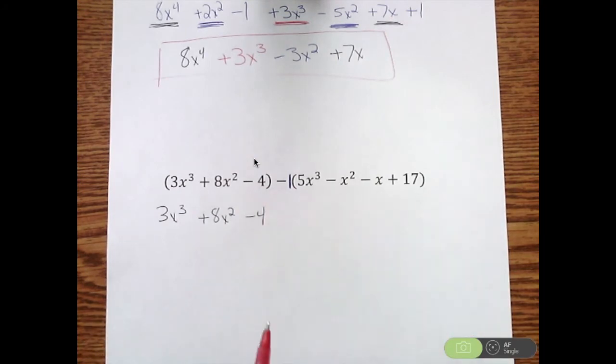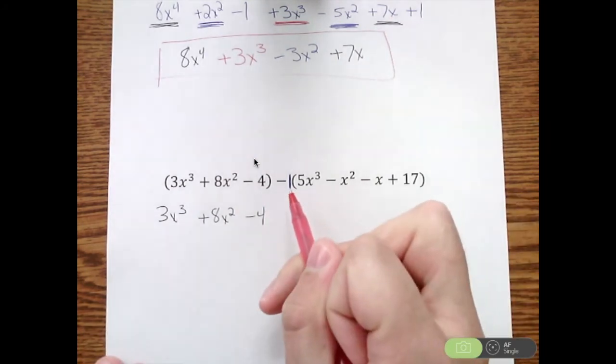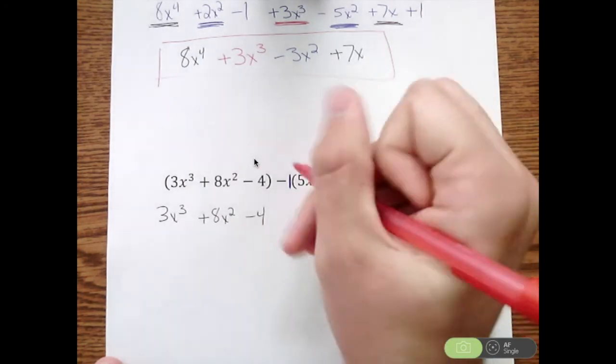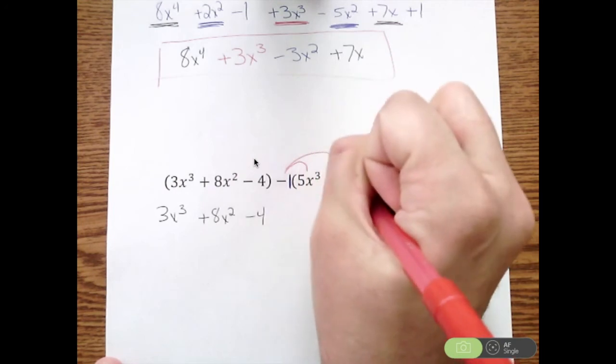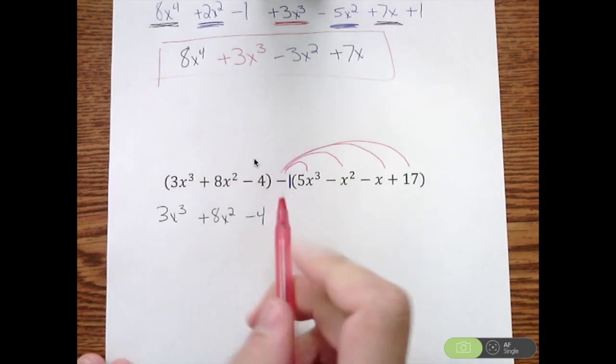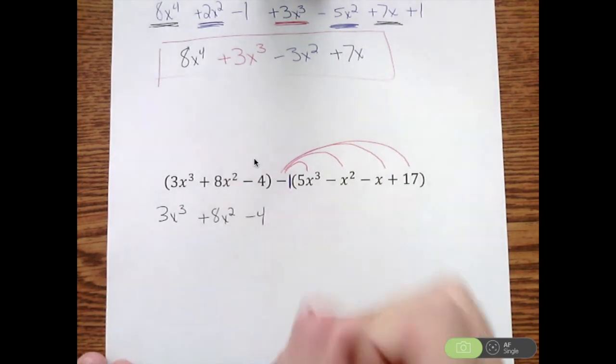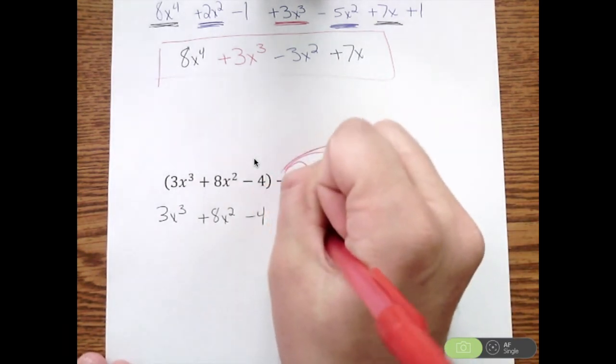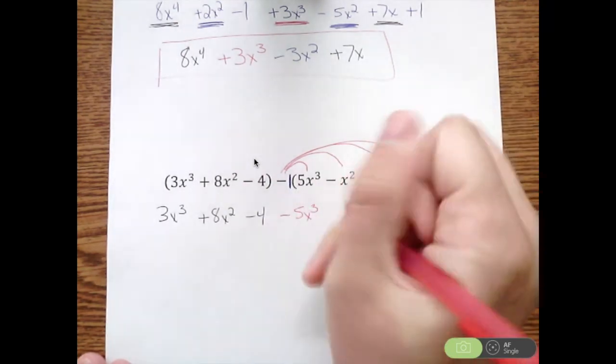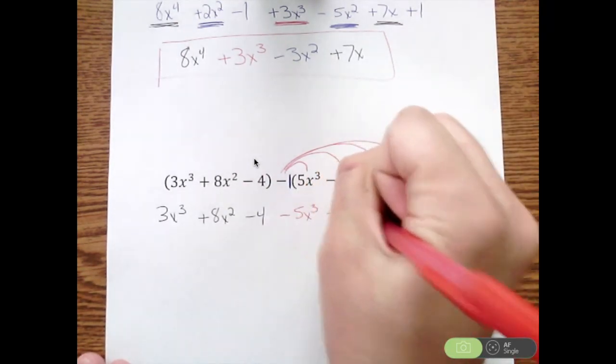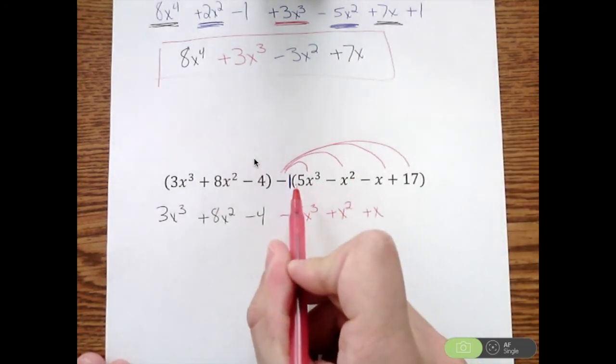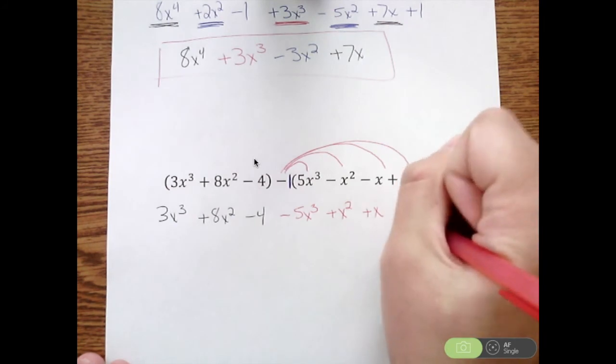The second polynomial here, we're going to take this negative 1 and it applies to everything in this parentheses. I'm going to distribute it to every single term in that polynomial. So I have a negative times a positive 5x cubed. That's a negative 5x cubed. A negative times a negative x squared is a positive x squared. A negative times a negative x is positive x. And a negative times 17 is minus 17.